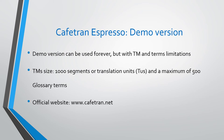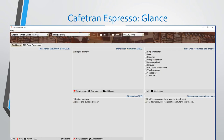The demo version supports a maximum of 500 glossary terms. If you want to remove this limitation and use the software for professional translation, you may have to buy the software. The official website is caftran.net. Here is a quick look at the Cafetran Espresso tool — you can see memory settings, machine translation options, and the terminology search on the right side.